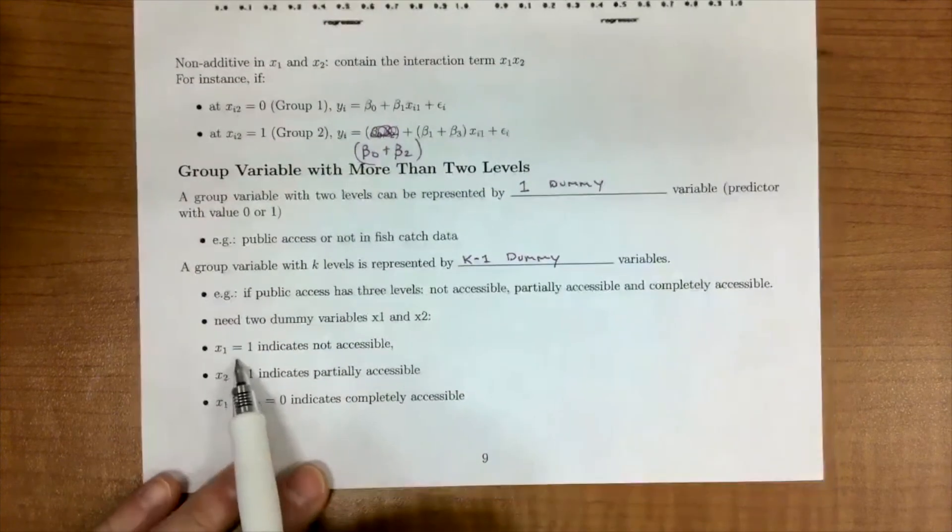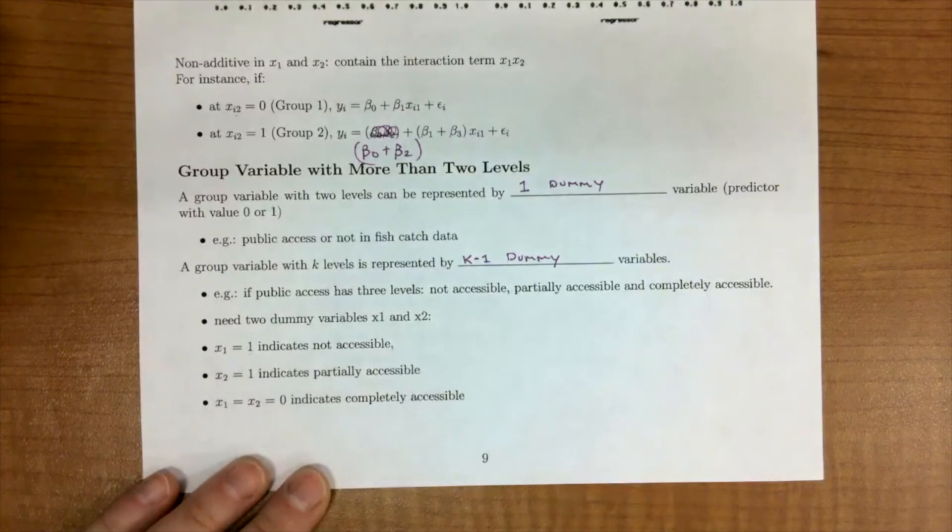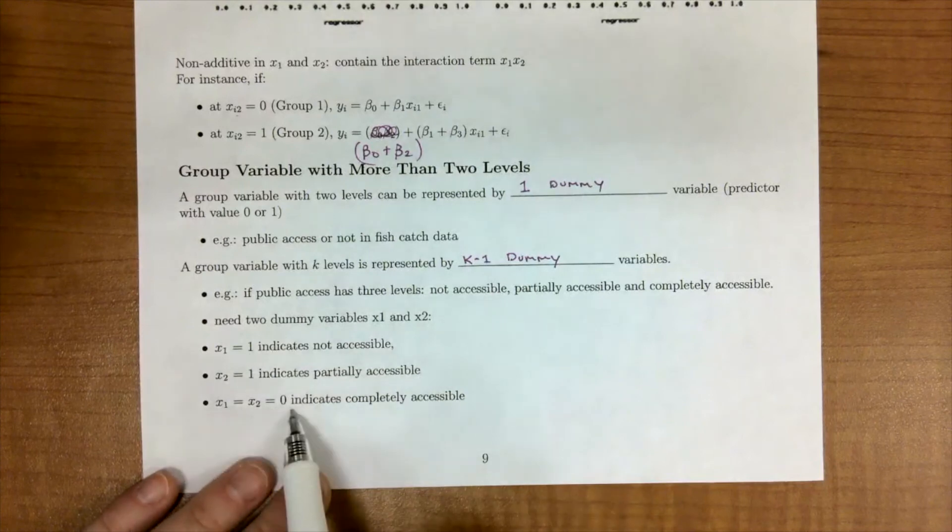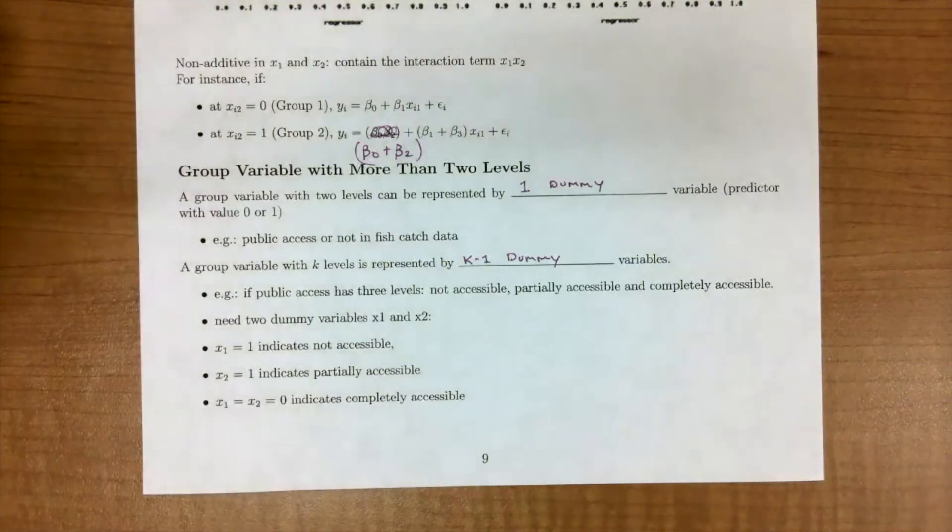So maybe x1, if it's 1, it's not accessible. If x2 is 1, then it's partially accessible. And then if both of them are 0, then it's completely accessible.